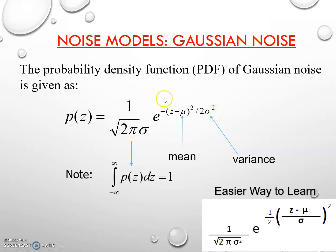This just looks a bit difficult to learn, so here I have written an easy way to learn it. This is 1 by under root of 2π σ squared, times e to the power minus 1 by 2, times (z minus μ divided by σ) whole squared. This is a very easy way to learn the Gaussian noise formula.